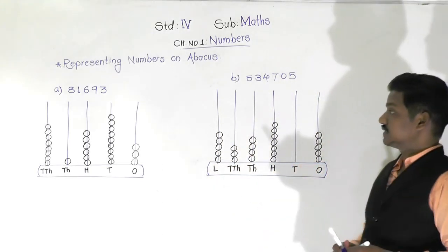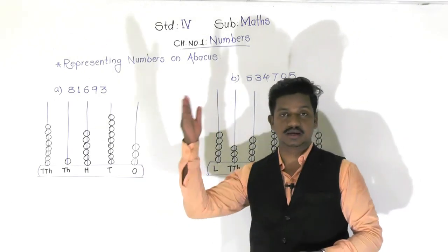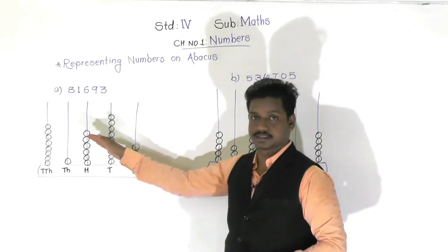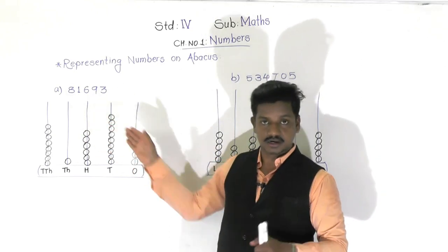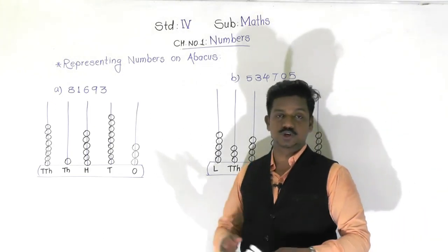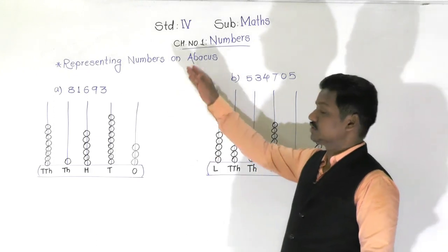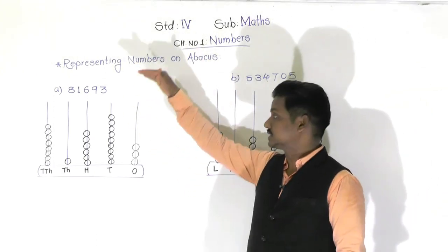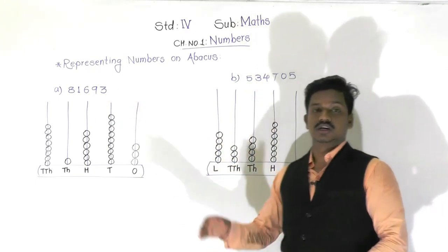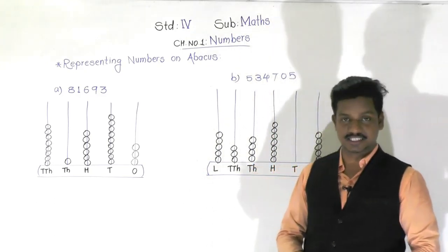So this way we can read a number or identify the number given on an abacus, as well as represent a given number on an abacus using beads. If you have any doubt, you can ask me in the comment box or on the WhatsApp group. Tomorrow's lecture will start Practice 1.1 with more examples on this topic. I hope you have understood this - thank you for watching and have a nice day!